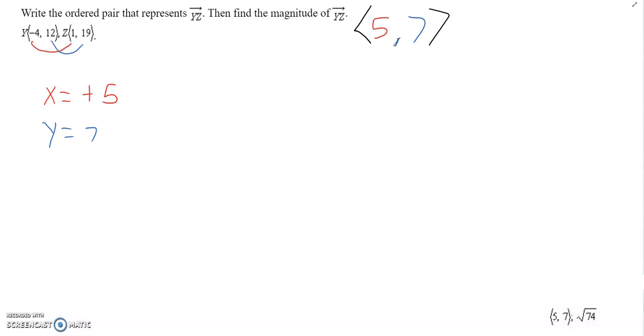So we should be able to get our ordered pair from there. We can do the same thing that we did by drawing the right triangle. X positive 5, so up to the right positive 5. Y is a positive 7, so up 7. Do a Pythagorean theorem.